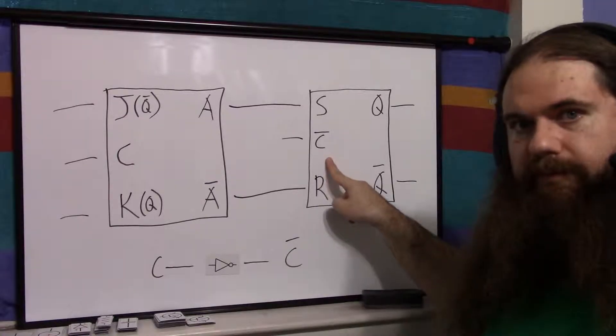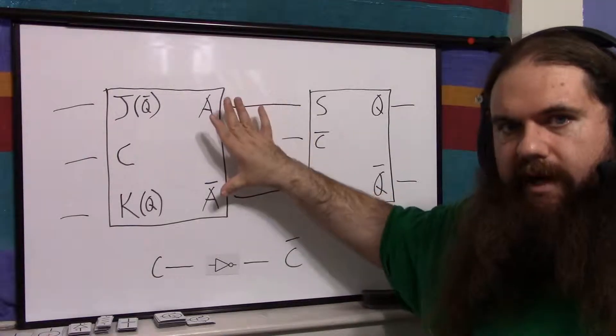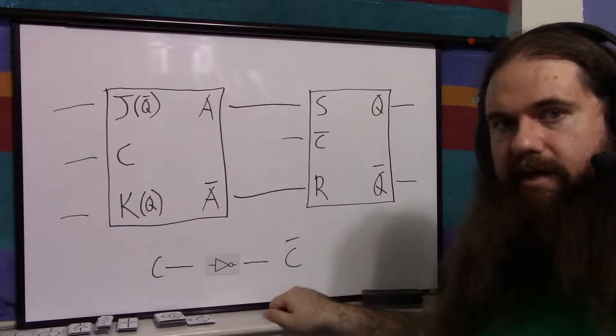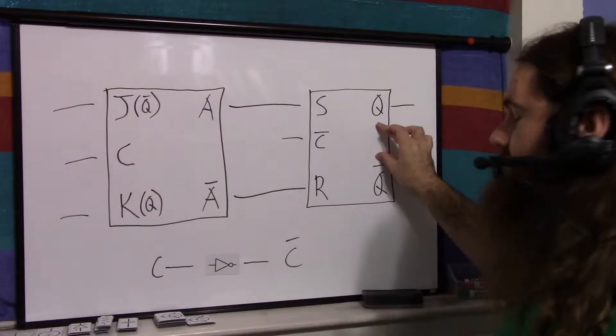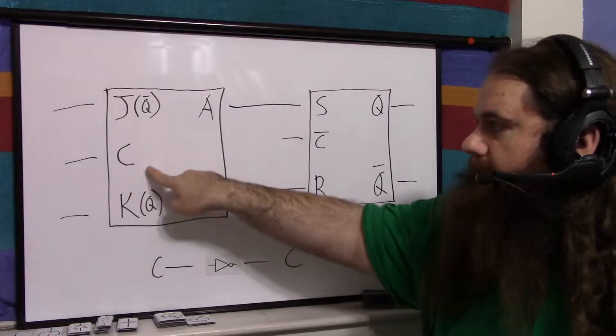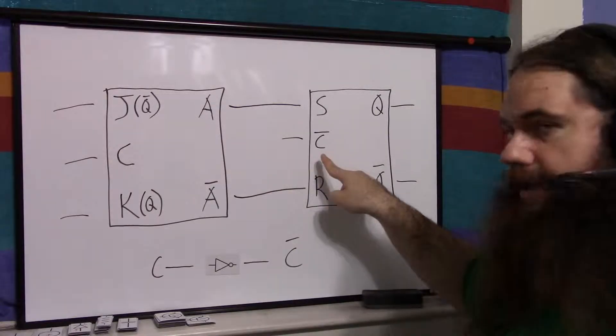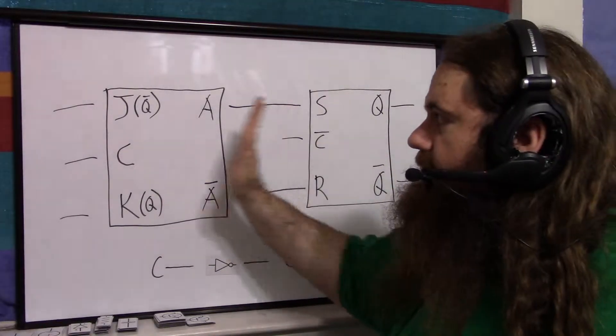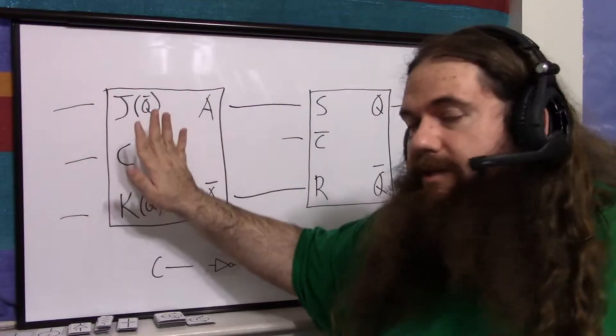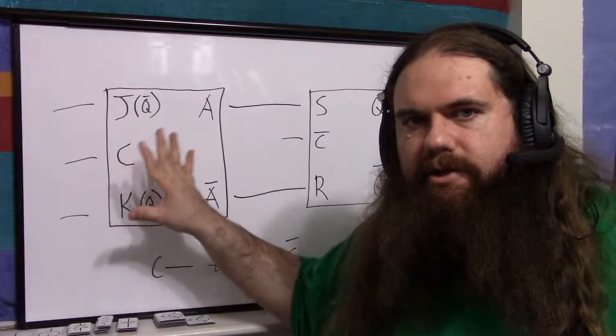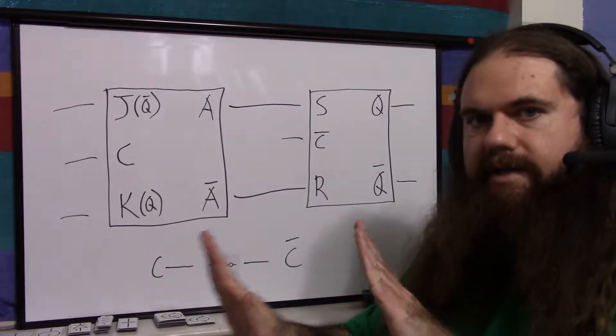So this flip-flop, which is receiving the stable finalized A and not A, processes that because it's getting a high clock signal. It processes it and sets Q and not Q, and Q and not Q start changing and feeding back into here, but the clock signal was low. It's high over here because of the inverter, but it's low over here. So despite Q and not Q changing wildly, perhaps, this flip-flop is disabled. So it's not going to be changing. And so you get it in lockstep.